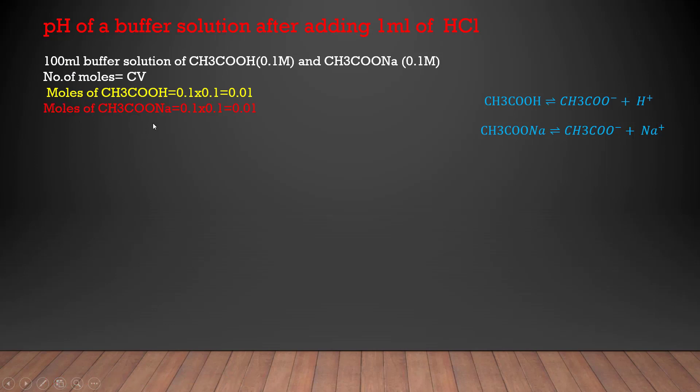And similarly the number of moles of sodium acetate comes out to be 0.01 as well. Since we have added 1 ml of HCl so let's calculate its moles as well and these are 0.001.